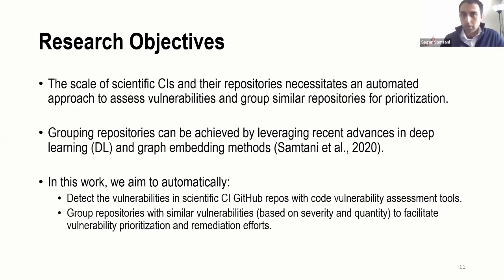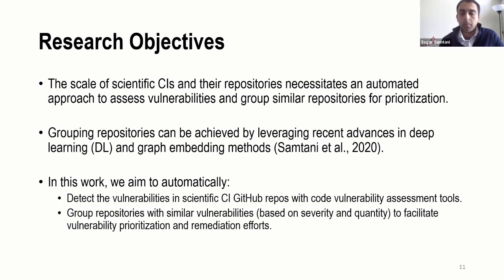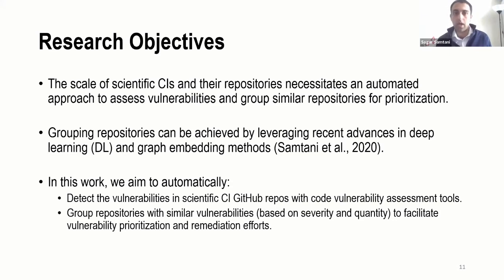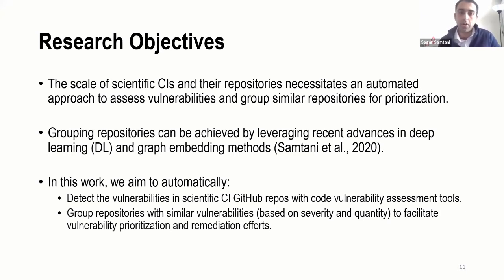What we're really focused on is that the size and scale of repositories within a scientific CI, as well as the vulnerabilities returned from prevailing tools, can be quite prohibitive for vulnerability management — things like prioritization, mitigation, and remediation. We're developing approaches rooted in deep learning and graph embedding methods to group repositories and facilitate these tasks. We aim to detect vulnerabilities in scientific CIs with code vulnerability assessment tools and then group repositories based on their vulnerability severity — high severity, low severity — to facilitate vulnerability prioritization and remediation efforts.